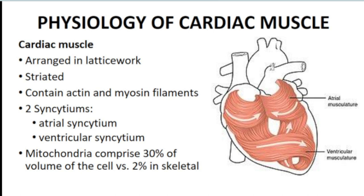Cardiac muscles are striated, but unlike other striated muscles that are voluntary, cardiac muscle is striated yet involuntary — that is why cardiac muscles are also called striated involuntary muscles. Similar to skeletal muscles, they also contain actin and myosin.